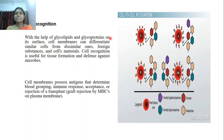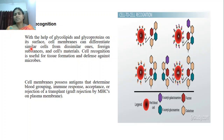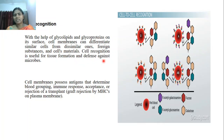The plasma membrane also does the function of cell recognition. We have all experienced blood grouping — blood typing. We all have different blood groups, and this is mainly because of cell recognition. With the help of glycolipids or glycoproteins on the surface of the plasma membrane, cells can differentiate similar cells from dissimilar ones, foreign substances and cell material. Cell recognition is useful for tissue formation and giving a defense against microbes.